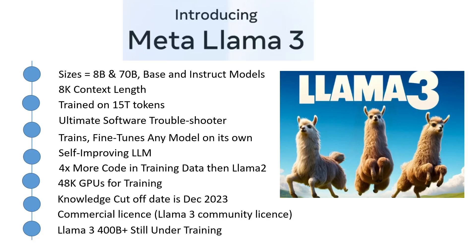Instruction fine-tuning is another great area they have covered. To fully unlock the potential of their pre-trained models on chat use cases, Meta innovated in their approach to instruction tuning. Their post-training approach is a combination of supervised fine-tuning (SFT), rejection sampling, proximal policy optimization (PPO), and direct policy optimization (DPO). The quality of prompts used in SFT and preference rankings used in PPO and DPO has an outsized influence on the performance of the aligned model.